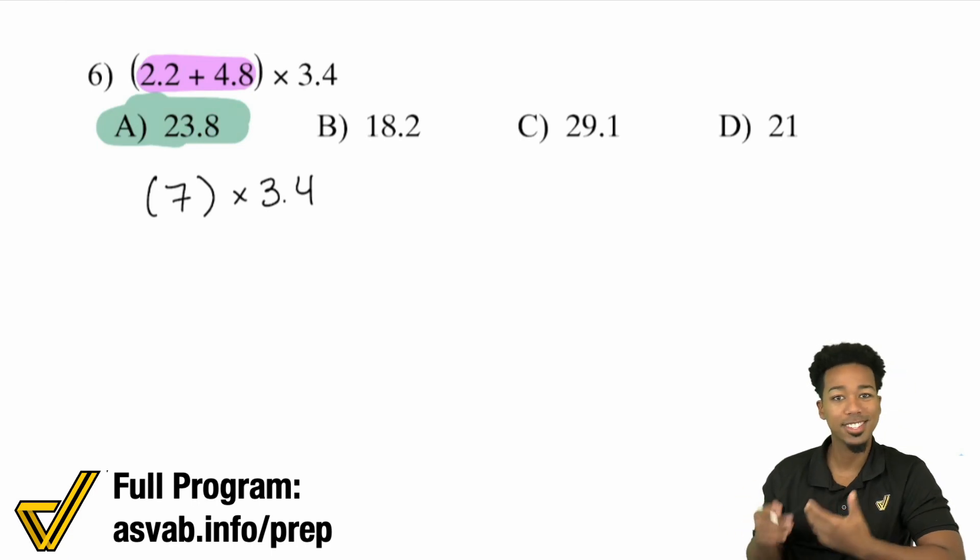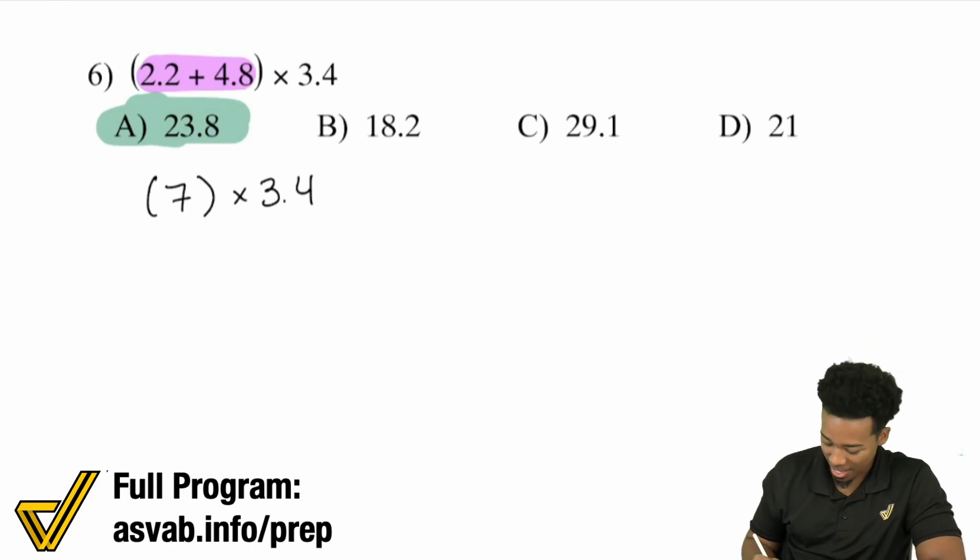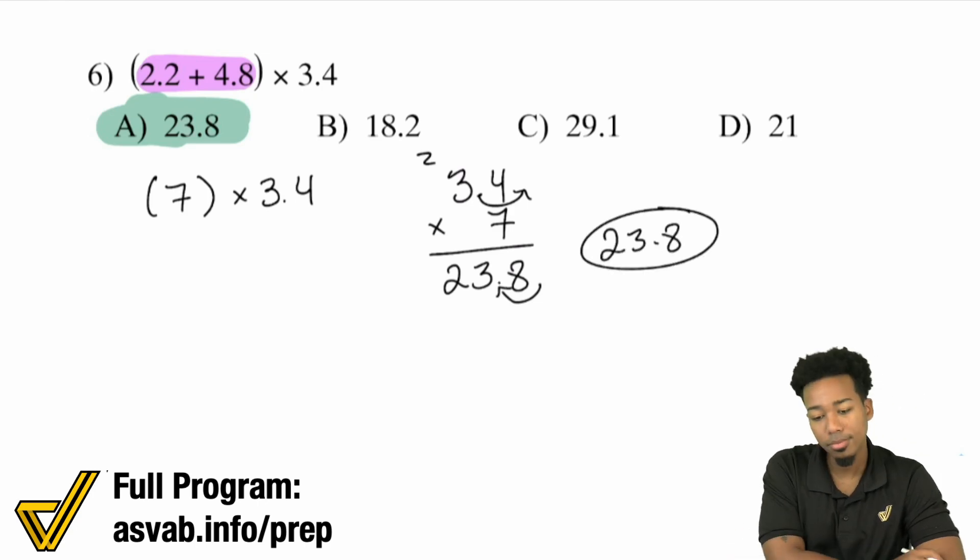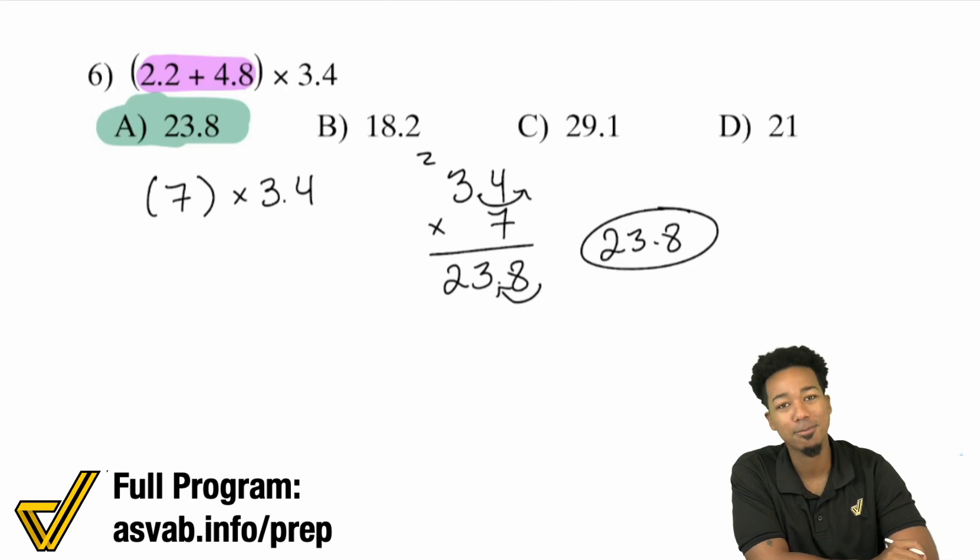So notice with mental math, this can be very, very quick. Even with decimals. Right here, just proving it to you. 4 times 7, 28. Carry the 2. 3 times 7 is 21. Carry the 2, 23. One decimal place there. One decimal place back. 23.8. I want to make sure I'm proving it to you, my math quarter people, because you know I got your back.